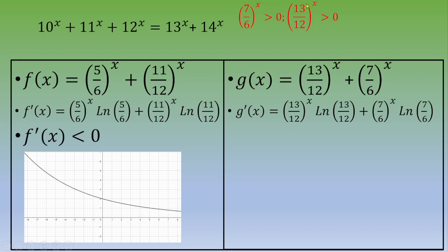Whatever the value of x, you end up with two strictly positive numbers. Then, because 7/6 and 13/12 are greater than 1, you can end up with ln(7/6) and ln(13/12) are strictly above 0.